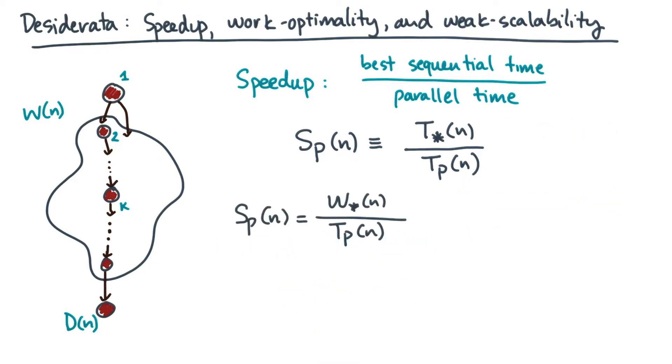Let's write speedup in terms of best sequential work and parallel time. Now, in the general case, we can use Brent's theorem to get an upper bound on time and therefore a lower bound on speedup. So let's go ahead and plug in Brent's theorem. For notational ease, I've dropped this paren of n in the right-hand side. Just remember that there's a dependence on n there. Let's do a little bit of algebra on the right-hand side to get it into a form that we can analyze more easily.